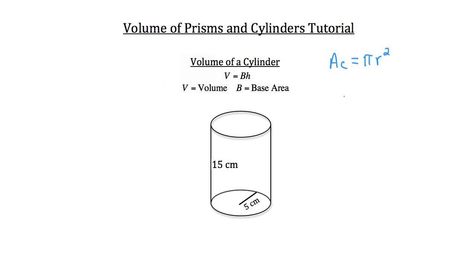In this case, they've provided the radius of that circular base. It's 5 centimeters. So the area of our circle is going to be pi times 5 squared. 5 squared is 25, so the area of our circle is equal to 25 pi.